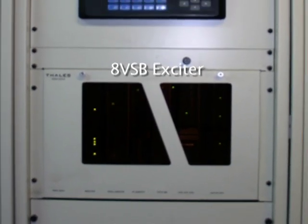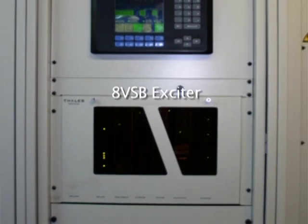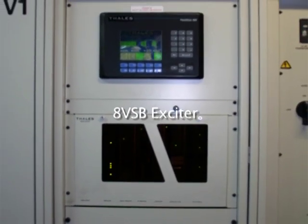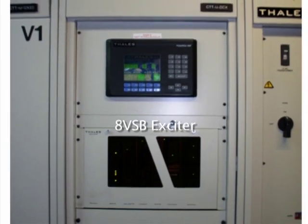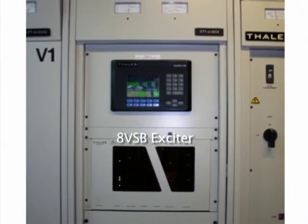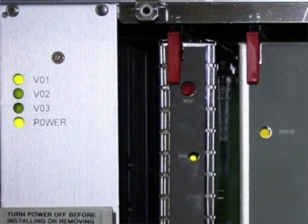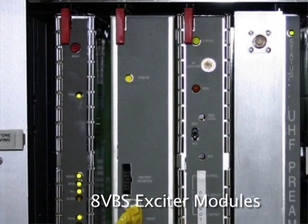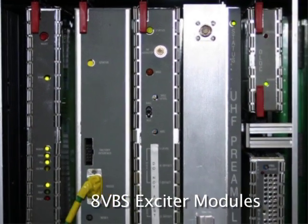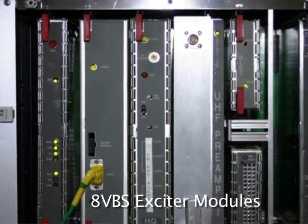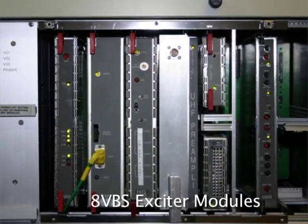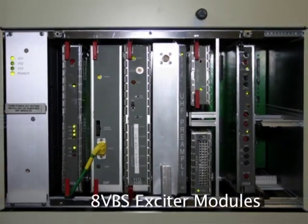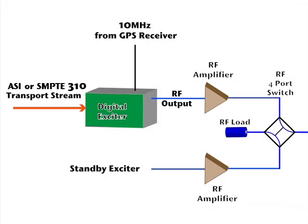The digital exciter is housed in the exciter cabinet along with the transmitter GUI control panel. Behind the front panel are the different modules that perform all the functions required to convert the transport stream into the 8VSB RF signal. As you can see, this exciter contains a UHF preamplifier, which on some exciters is external, but on this one is contained within the exciter.